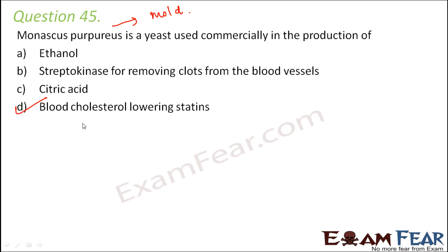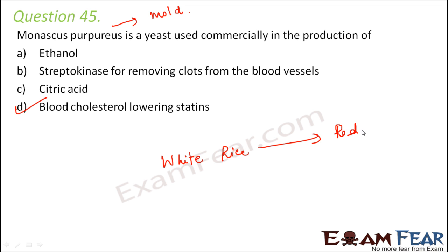There are many alternate names for this particular mold — one is rice kernel discoloration. White rice is fermented with this mold, and that is how we get red yeast rice. So white rice when fermented with this mold becomes red yeast rice.